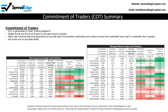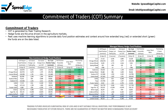Commitment of trader data, commonly referred to as COT, is generated by Peak Trading Research using data published every week by the CFTC. Hedge funds are price drivers in the agriculture markets. Peak uses machine learning algorithms to provide daily fund position estimates in context around how extended long, represented by red, or extended short, represented by green, the funds are on the date listed on the report. Cocoa has a 95 out of a possible 100 net position percentile for non-commercial hedge funds and a 93 out of 100 for managed money hedge funds. In addition, the Z-scores, which measure how statistically extended current fund positioning is versus recent history, are the highest amongst all ag markets.